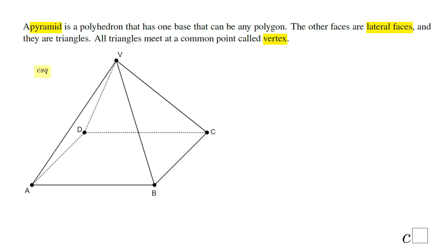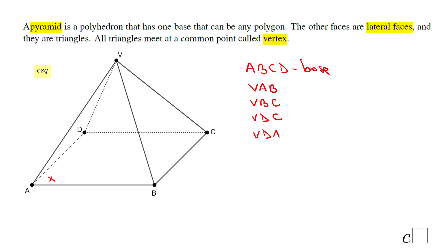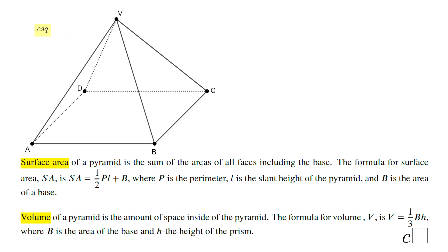My next polyhedron is what we call a pyramid. We have one base: ABCD is the base. We have lateral faces like triangle VAB, and you notice this is a triangle. VBC, VDC, VDA — all these are lateral faces, and they meet at this point which we call a vertex.